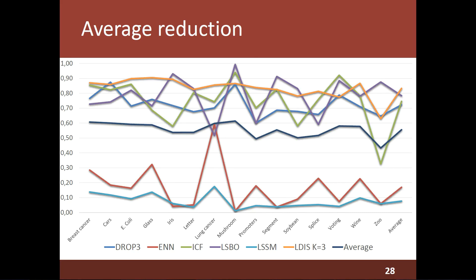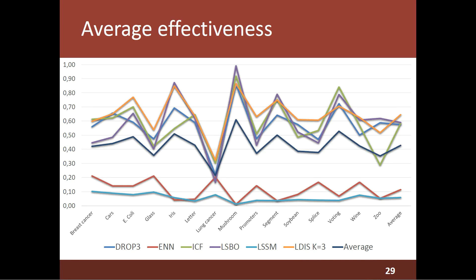This chart represents the variation of reduction rate of each algorithm in each dataset. We can see that LDIS achieves the highest reduction in most of the datasets, and it also achieves the highest average reduction rate. This chart represents the average effectiveness of each algorithm in each dataset, and we can see that LDIS achieves the highest effectiveness in most of the datasets and also achieves the highest average effectiveness.